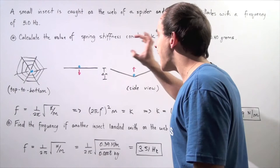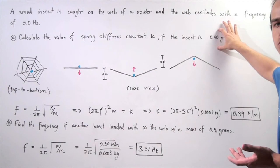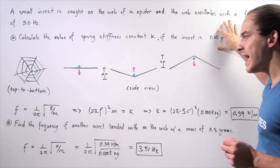Now the only thing we're given in this problem is the frequency as well as the mass of our object. So that means if we want to calculate the spring stiffness constant k, we have to use the following equation.